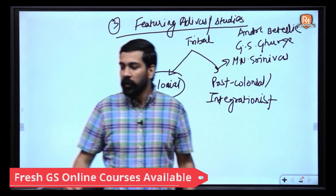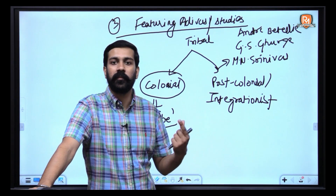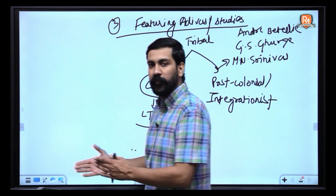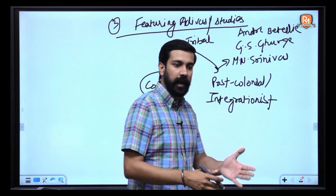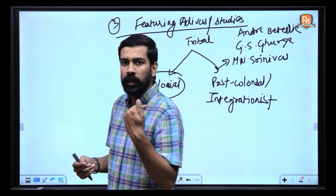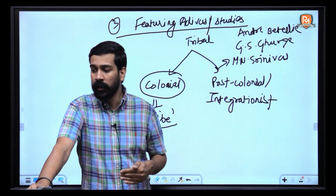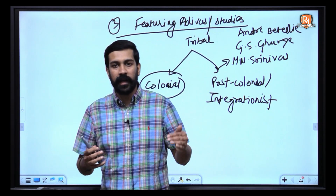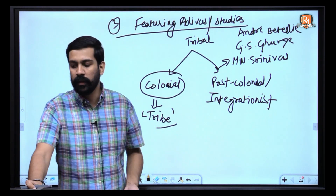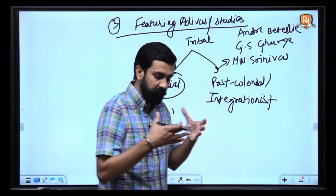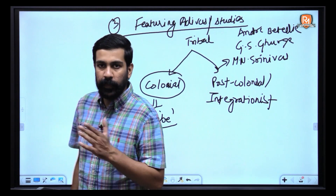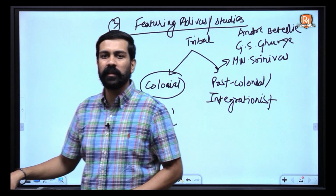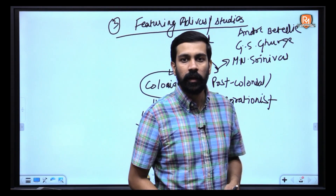This integrationist approach further states that frontier or isolated forest areas were not isolated from the larger economy in pre-colonial India — they were very much part of mainstream society with integrated economies and exchange. Isolation only came after colonial intervention, which destroyed the local economy, made India an importer of finished goods and exporter of raw materials, and constructed these frontier areas as isolated to create a divide between tribe and caste — so that these groups, who were strongly resisting British rule, could be specifically targeted and their resistance suppressed.